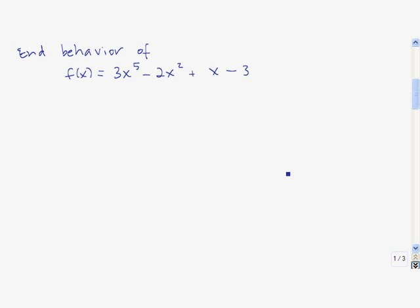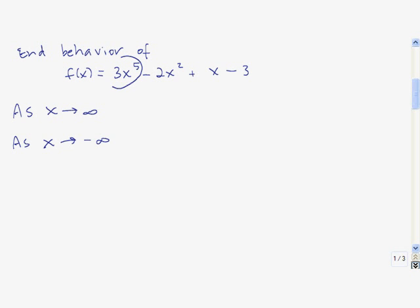Let me show you how you can find the end behavior of a polynomial without even looking at the graph. For end behavior, we're talking about what happens as x goes to infinity and as x goes to negative infinity — very large positive values and very large negative values. For a polynomial, the leading term — here 3x to the fifth — is always going to determine the end behavior, because when you take a really huge number and raise it to the fifth power, it completely overpowers the lower order terms.